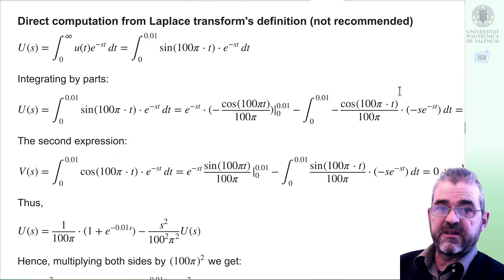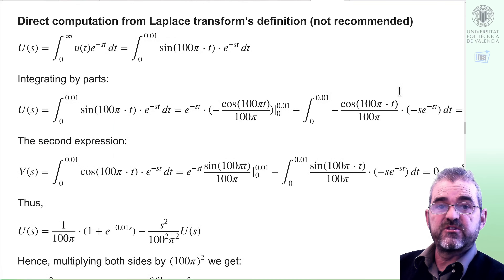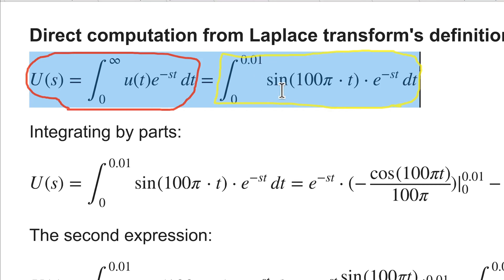A second way of computing the Laplace transform is applying the Laplace transform definition directly. I flag it as non-recommended because usually straightforward manipulations from Laplace transform tables are faster than this integration. But let's go with it. The Laplace transform of a signal is this integral by definition, and in this case, as our signal ends at time 0.01, we can stop integration at 0.01. So we need to compute this integral.